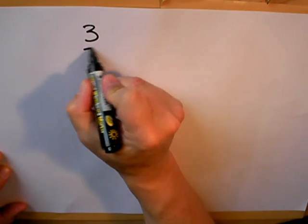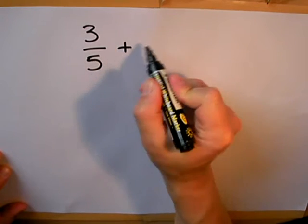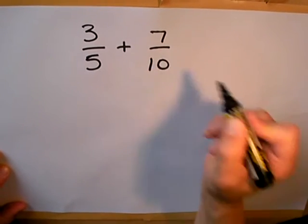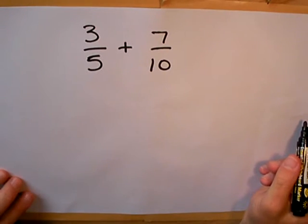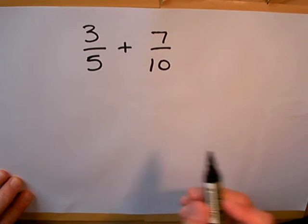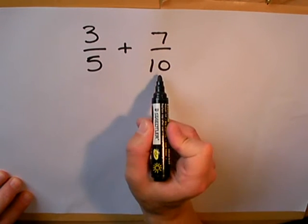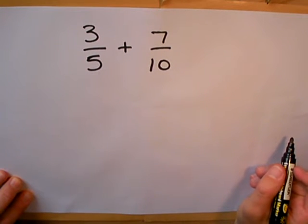Okay, I'm going to add together some fractions, but this time the fractions are going to have different denominators. Here's my first example: 3 fifths add 7 tenths. Now I can't add these two fractions straight away because the fifths and tenths are different types of fractions. What I need to do is to make them the same.